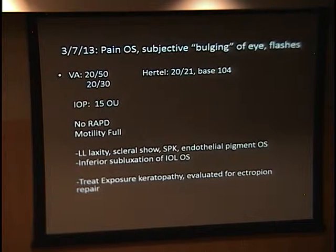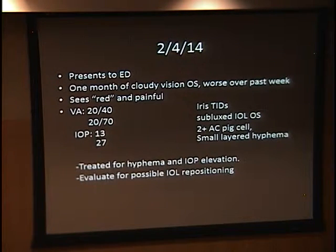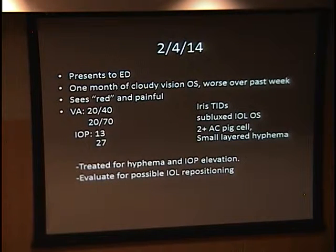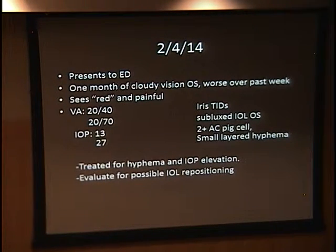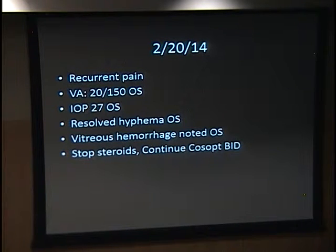We decided to treat his exposure keratopathy and sent him to oculoplastics for an ectropion evaluation. We started cyclosporine and decided to wait on surgical intervention. He did not return as requested. About nine to eleven months later he came to the ER with cloudy vision in his left eye for about a month, worsening over the past week, with red specs in his vision. Vision was 20/70, pressure up to 27 in the left eye, multiple iris transillumination defects, subluxed IOL, 2+ pigment in the anterior chamber, and a small layered hyphema inferiorly.